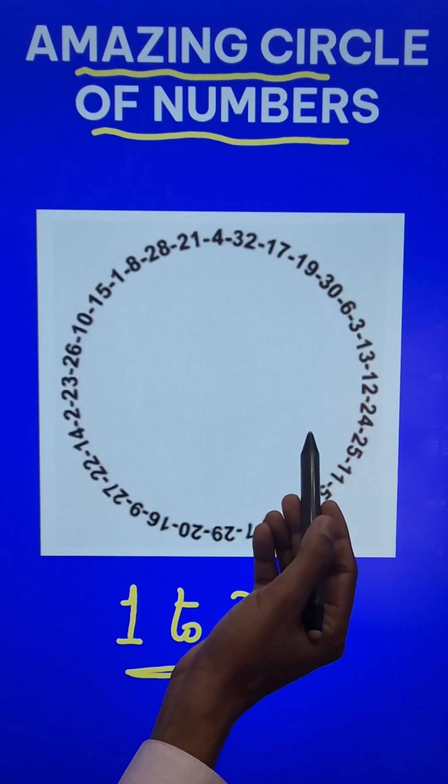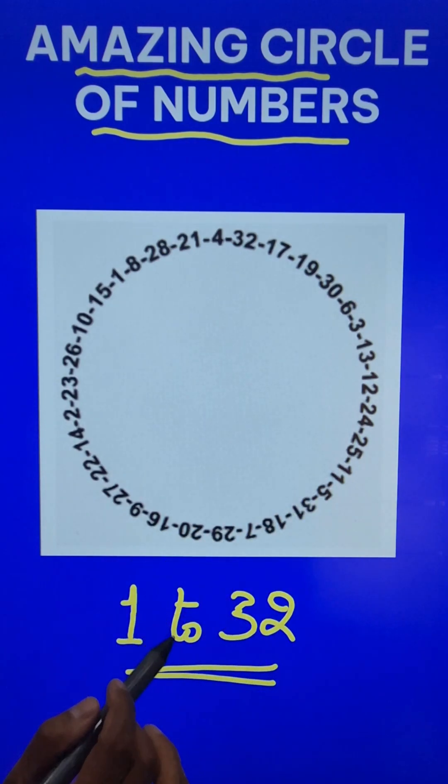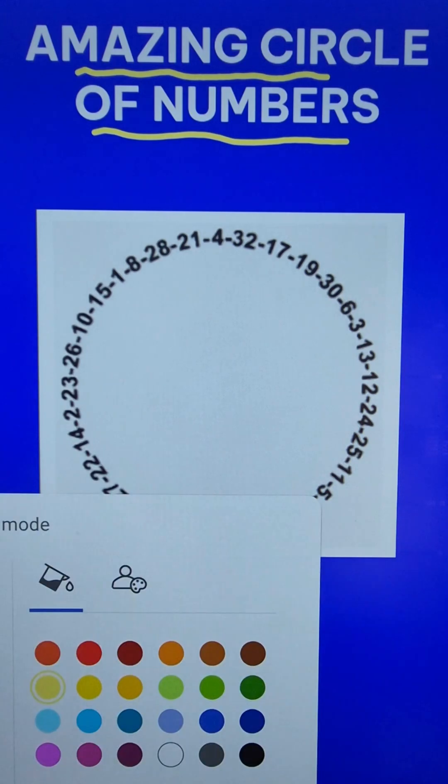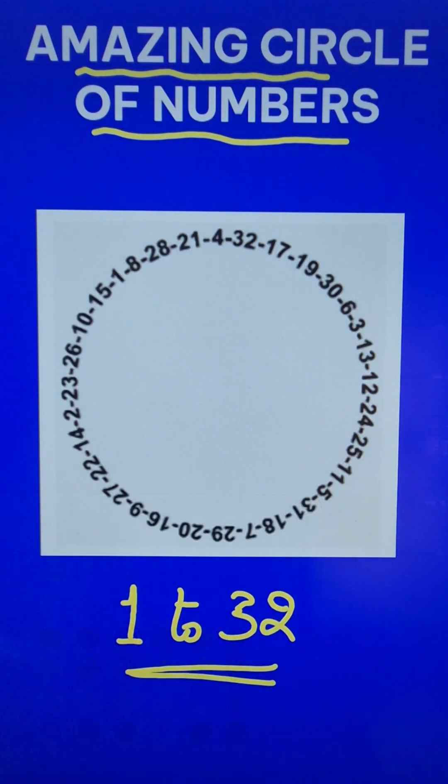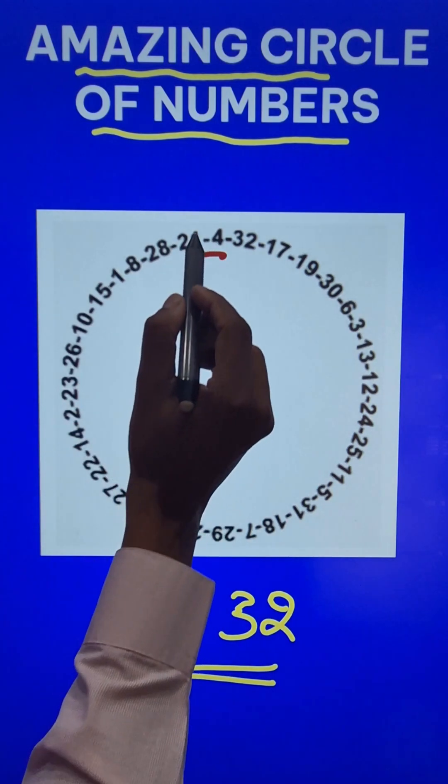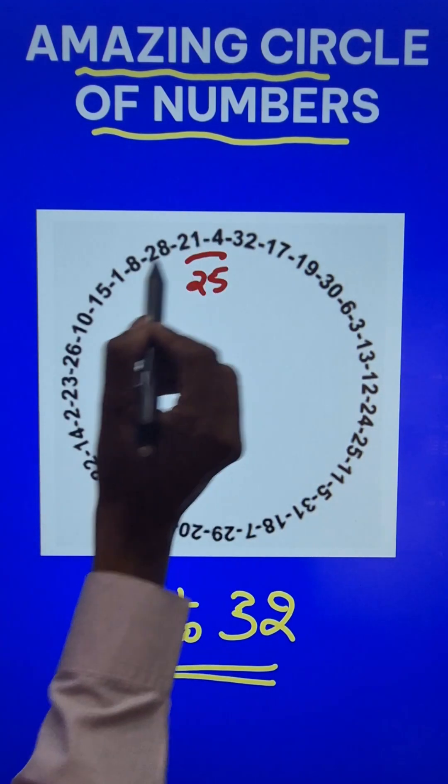The rule which we have used here is if you add any two consecutive numbers, let me take two numbers, let's take 21 and 4. They add up to 25, right, and 25 is a perfect square.